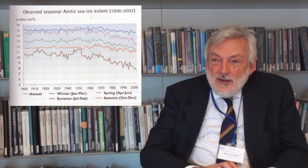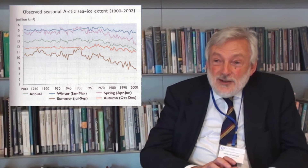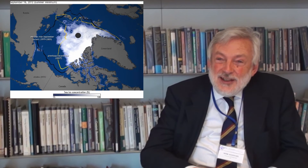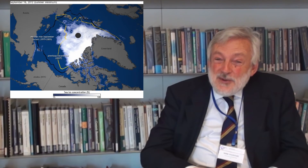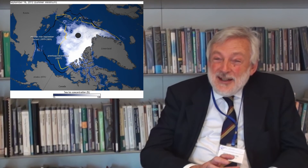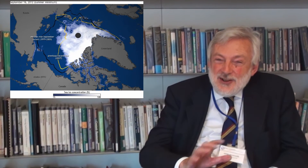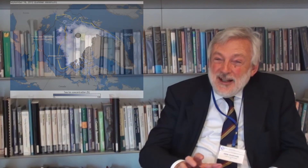This has further effects on other aspects of the climate system, so there is a very big change. For instance, when you look at a satellite picture of the Earth in the summer, it now looks blue at the top end instead of white. So there is a big change to the whole planet that is due to this change in the Arctic.